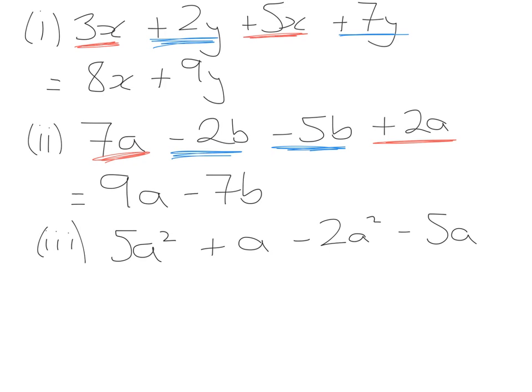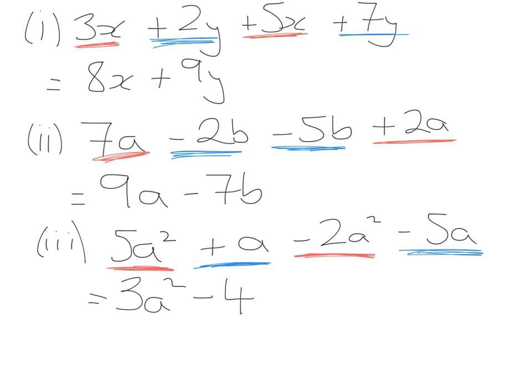One more example: 5a squared plus a minus 2a squared minus 5a. These questions confuse people because they think a squared and a are the same, but they're different. In algebra, you can only collect terms if they are identical. So 5a squared minus 2a squared gives 3a squared, and a minus 5a — having 1 and minusing 5 — gives minus 4a.